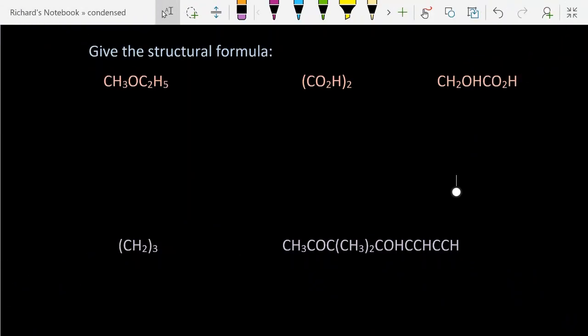Okay, give the structural formula for these. So we've got CH3, which is a methyl group. Now this oxygen is forming an ether linkage. Notice every carbon has four bonds, every hydrogen has one, and that oxygen in the middle has two bonds. So that looks good.